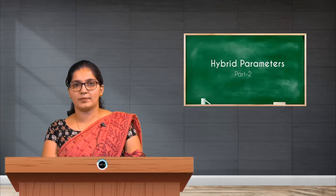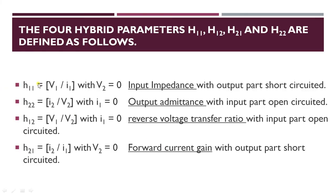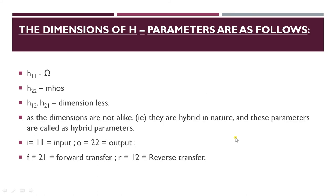So the four hybrid parameters H11, H12, H21, and H22 are defined as follows: H11 is V1 by I1 with V2 equal to 0 — input impedance with output port short circuited. H21 is I2 by I1 — forward current gain with output port short circuited. H12 and H22 are the reverse voltage transfer ratio and output admittance respectively, obtained when the input port is open circuited.